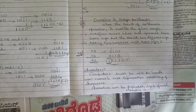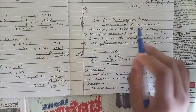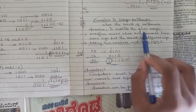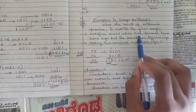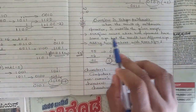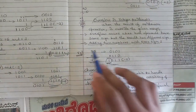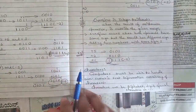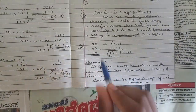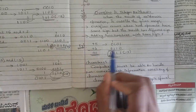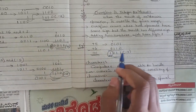One more concept is overflow in integer arithmetic. Overflow occurs when the result of an arithmetic operation is outside the given range. It occurs when both operands have the same sign but the result has a different sign. For example, adding two numbers like 5 plus 6 — if the result shows as minus 5, that indicates overflow.